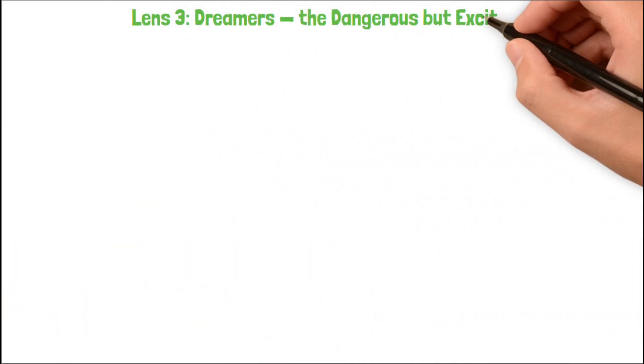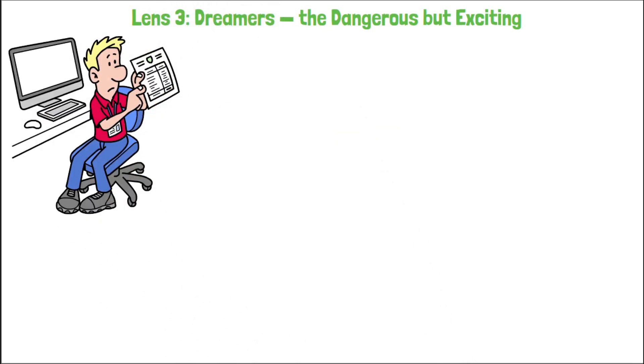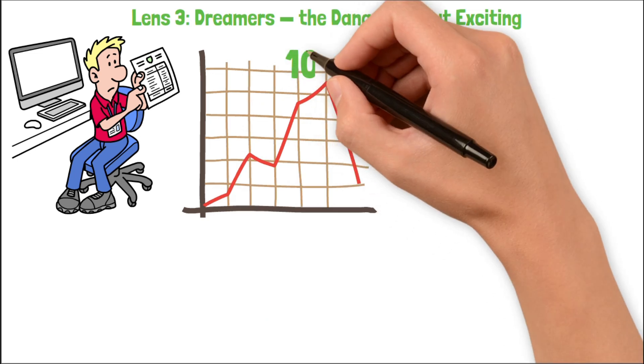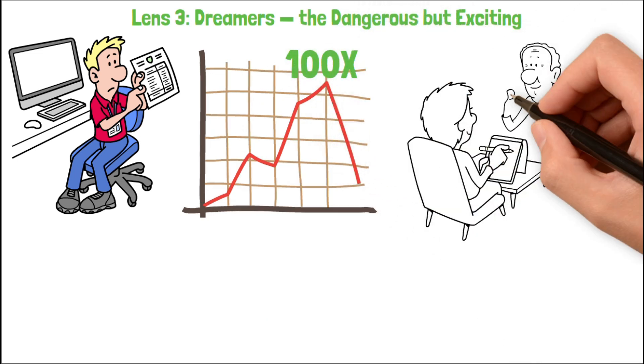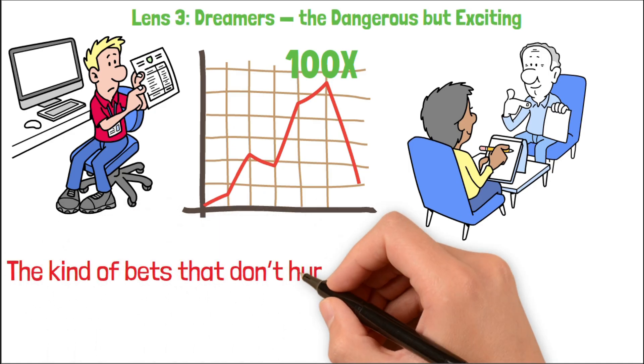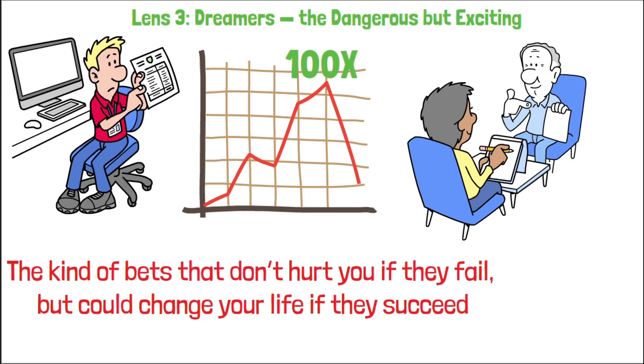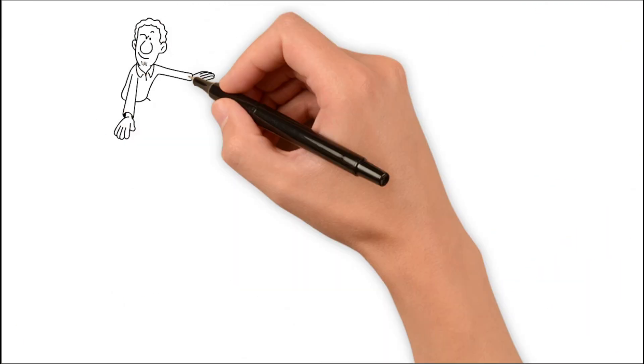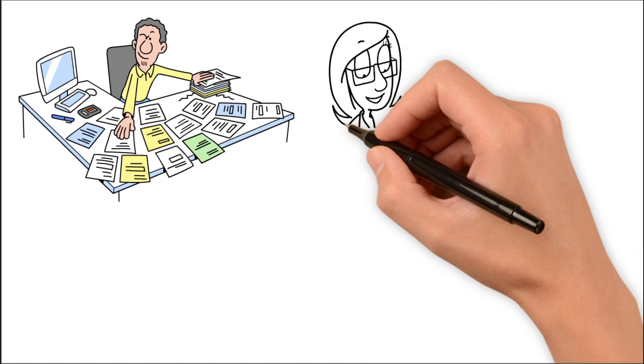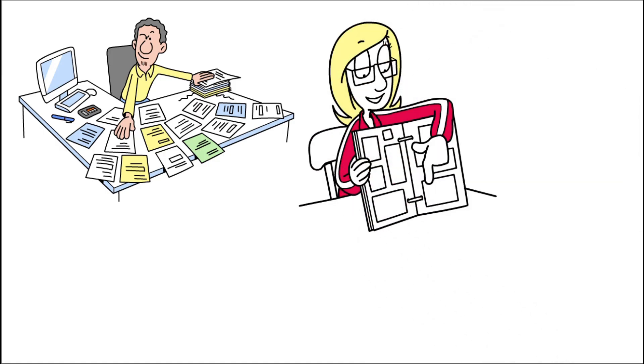Lens 3. Dreamers. The dangerous but exciting. These are the penny stocks, the underdogs, the labs with a whiteboard and a patent. They could 100x or vanish. These are tiny positions. Not for gambling, but for asymmetric exposure. The kind of bets that don't hurt you if they fail, but could change your life if they succeed. This is how I turn uncertainty into strategy. Because the truth is, I'm not trying to guess the winner. I'm positioning to benefit from the rise of quantum as a whole. And this three-layered approach protects my downside while keeping me in the game for the upside.